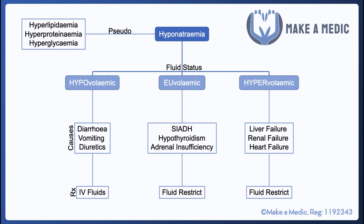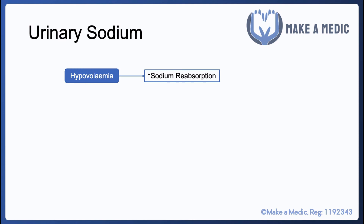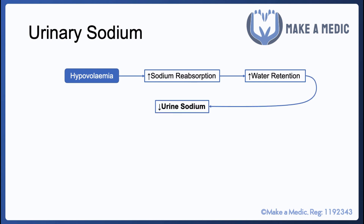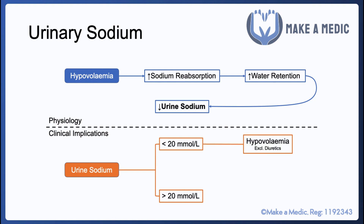While hypervolemic and hypovolemic hyponatremia are generally easy to distinguish, the line between euvolemic and hypovolemic can be more nebulous. One useful investigation to help delineate these causes is urinary sodium. In normal physiology, a hypovolemic patient will increase sodium reabsorption in the kidneys, which is followed by increased water retention to replenish circulating fluid volume — meaning urine sodium is low. A urine sodium below 20 mmol/L is therefore suggestive of hypovolemia, indicating the body is trying to retain more salt.